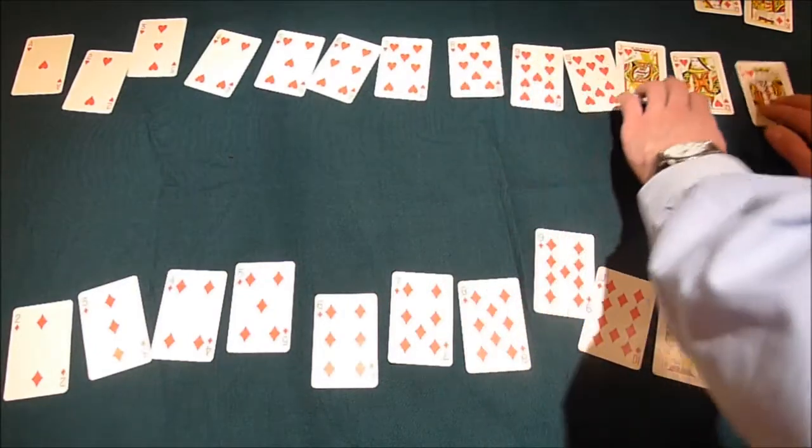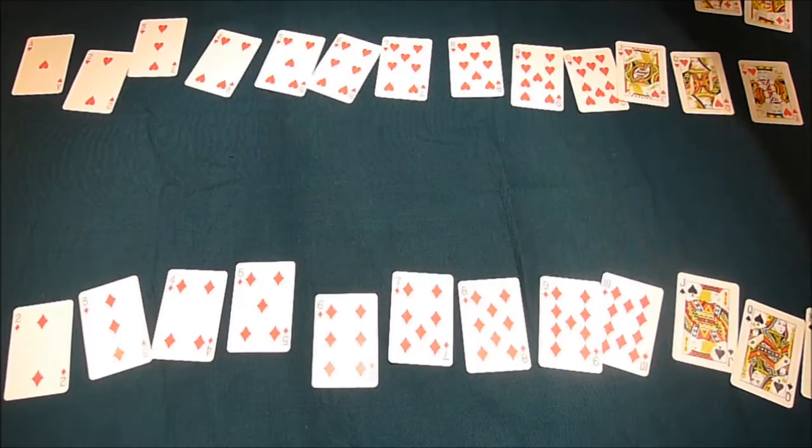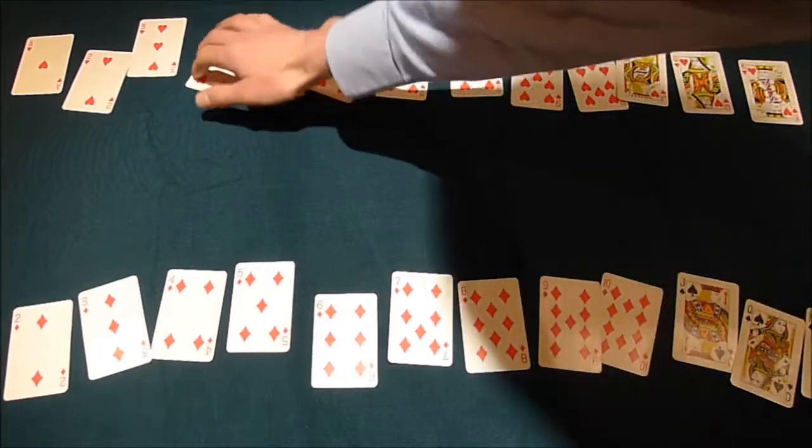This goes off to make two daughter cells. This goes off to make two daughter cells and the black suits, which went off over there, they've made two daughter cells as well. We've got four daughter cells and they're all haploid.